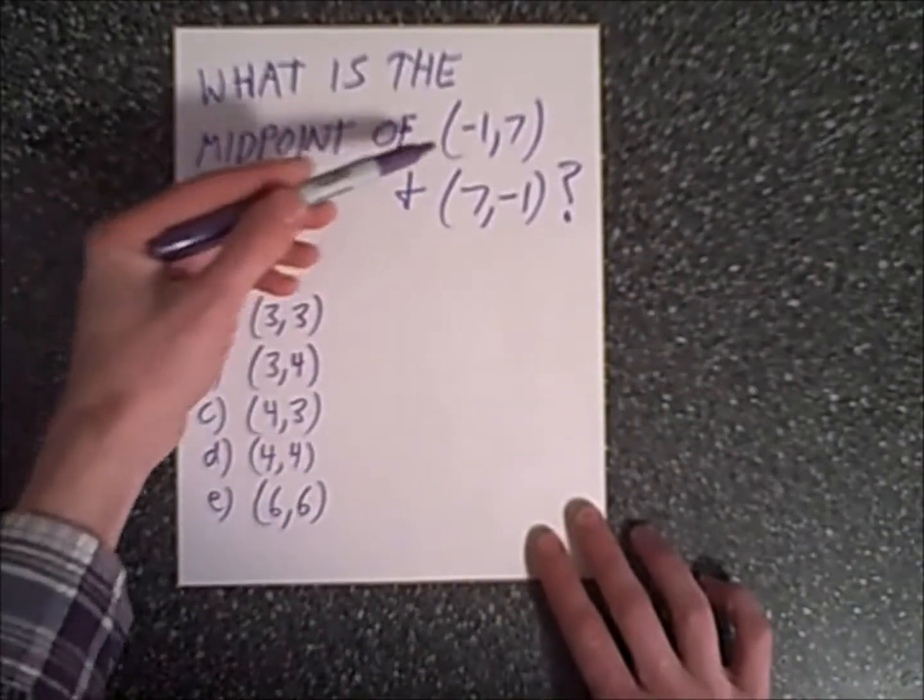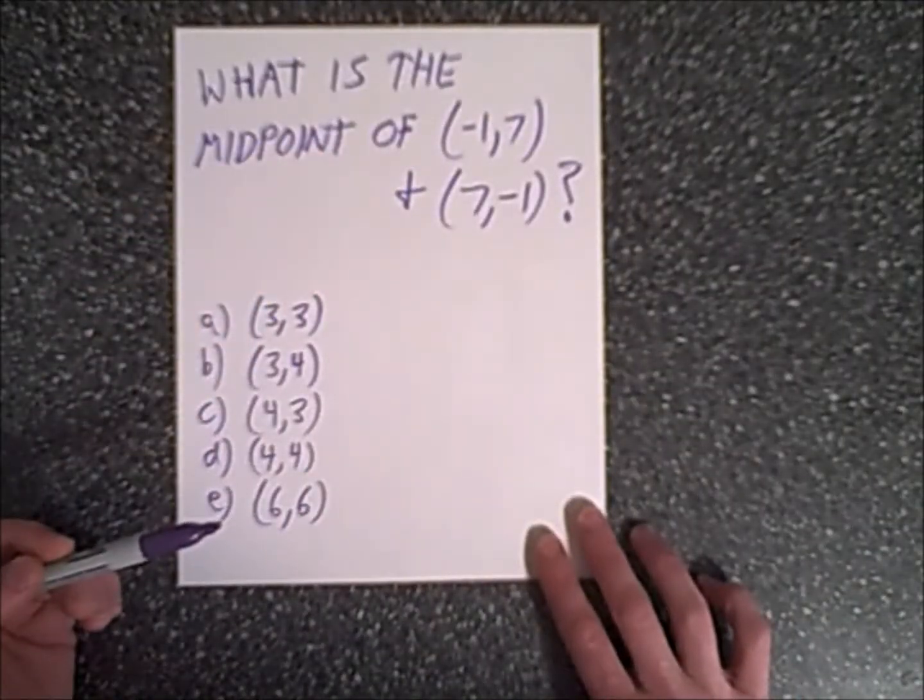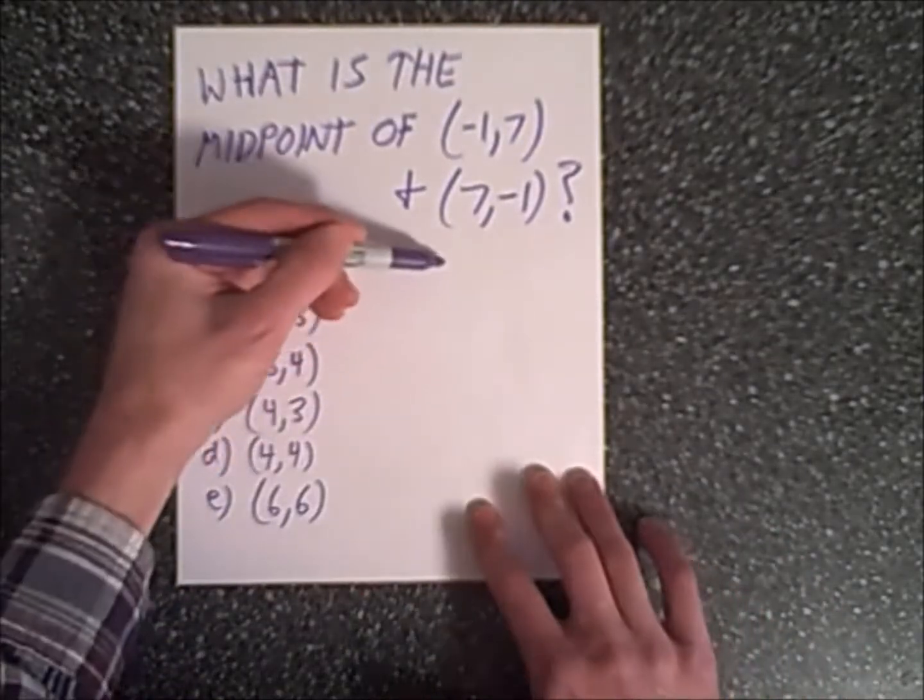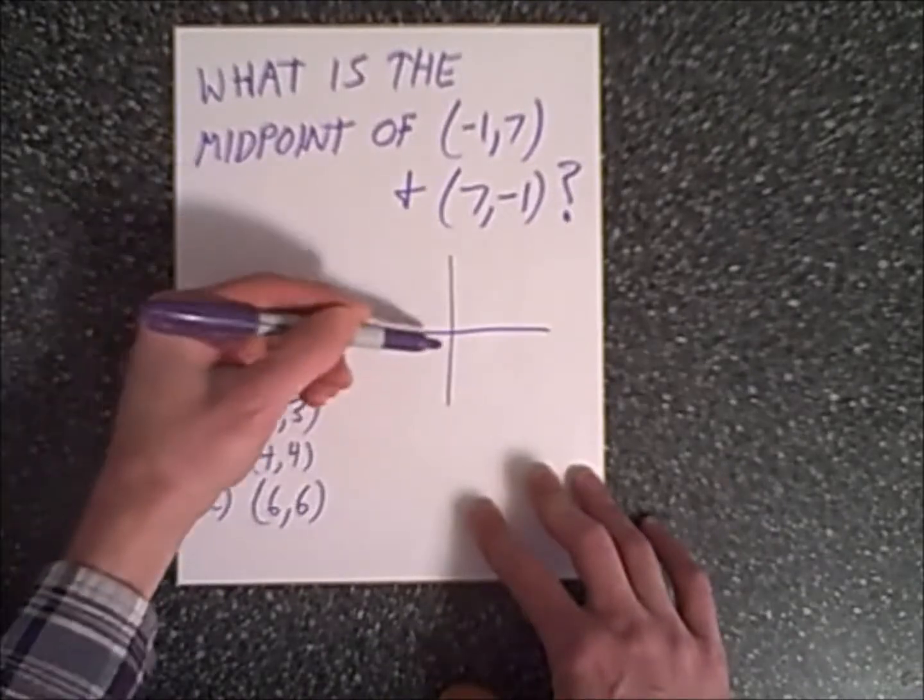What is the midpoint of negative 1, 7 and 7, negative 1? What I like to do is first, let's do a quick sketch or graph so we have a rough idea of what the answer will be.